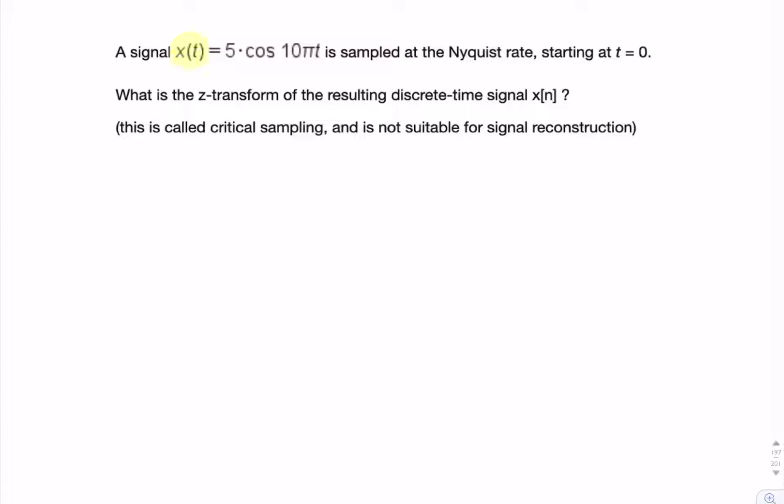In this question, we're given a continuous time signal x(t), and we're asked for the z-transform of x[n], the discrete time version of this, so obviously after sampling.